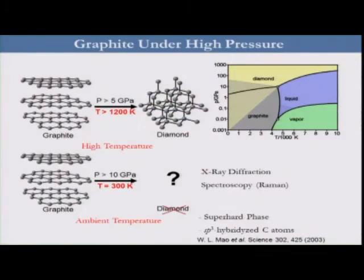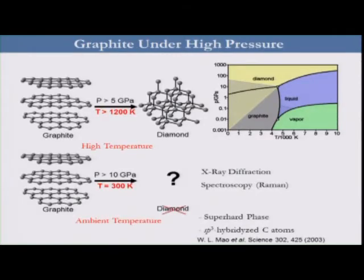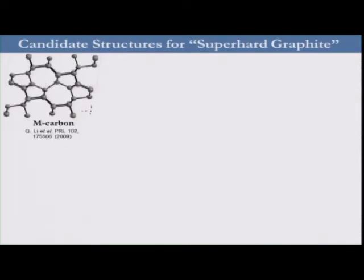But when checking the X-ray diffraction data and the spectroscopy, especially Raman, they found out that this phase is not diamond. This phase has been puzzling experimentalists for many years and has stimulated many theoretical efforts in order to predict its correct structure.